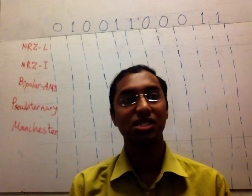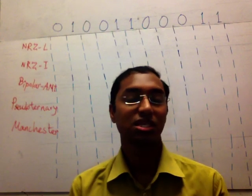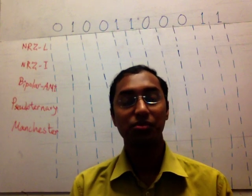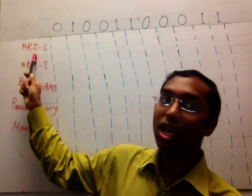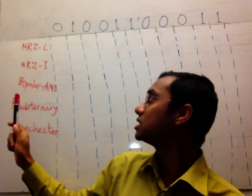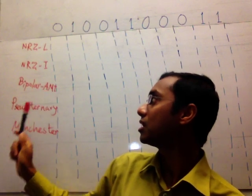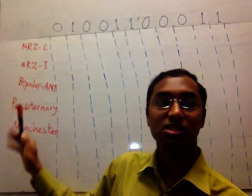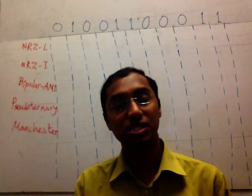In this video, I want to discuss digital data to digital signal encoding techniques. There are a few possibilities, but we will discuss non-return zero L, non-return zero inverted, bipolar alternate mark inversion AMI, zero ternary, and Manchester. These are the techniques to convert digital data to digital signal.